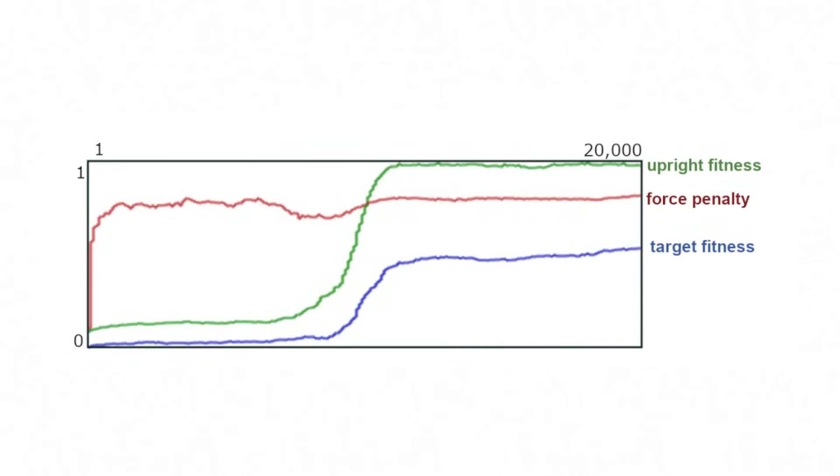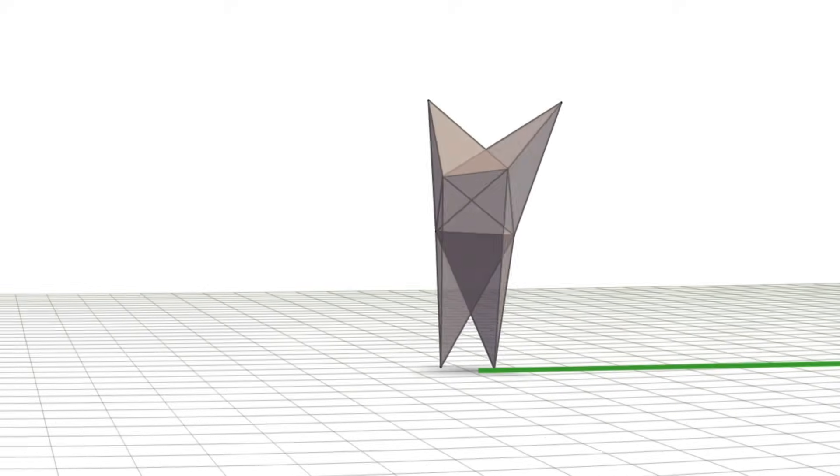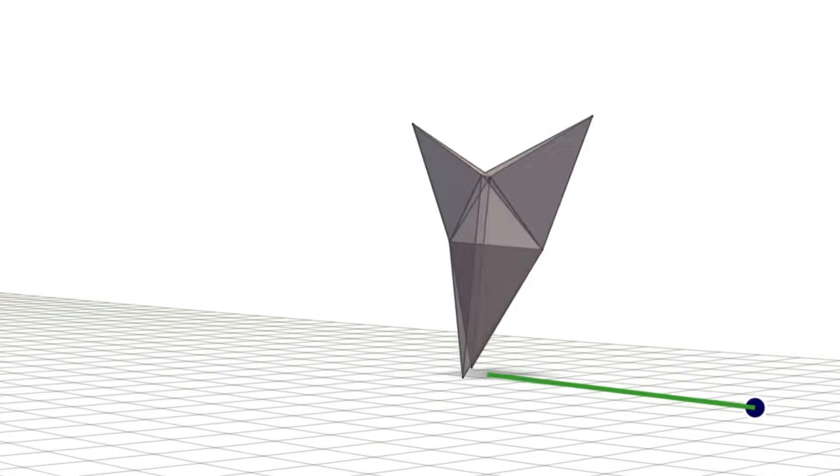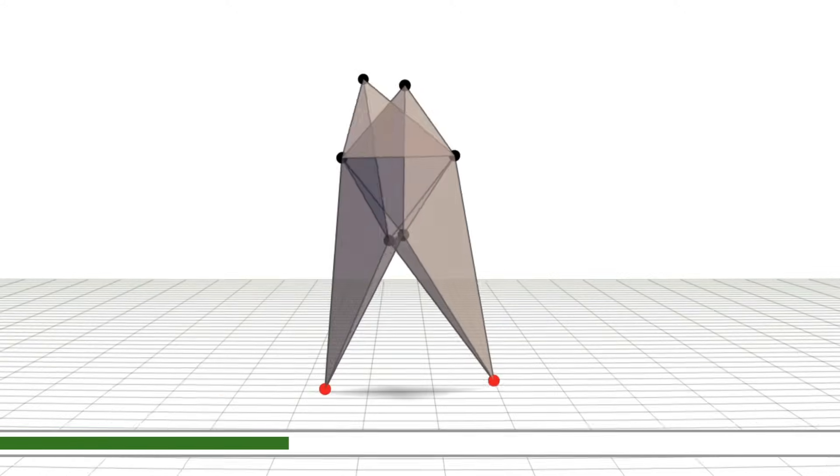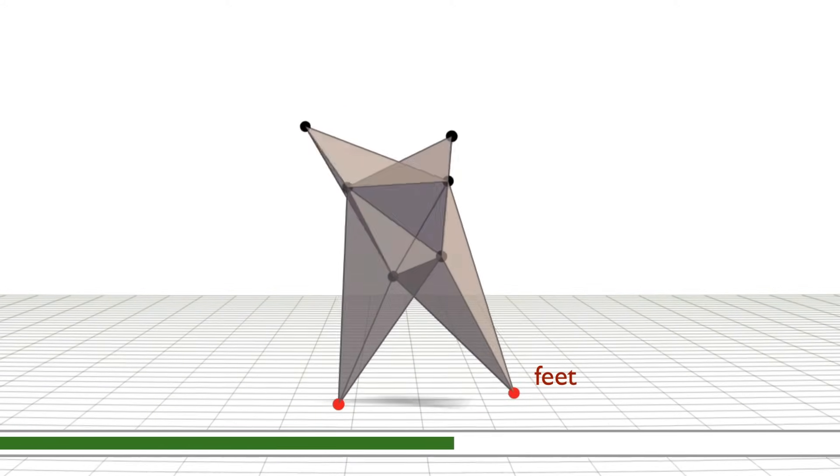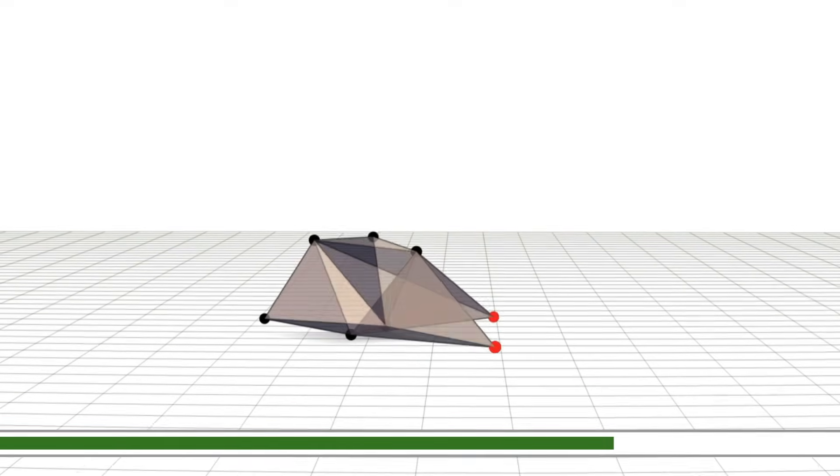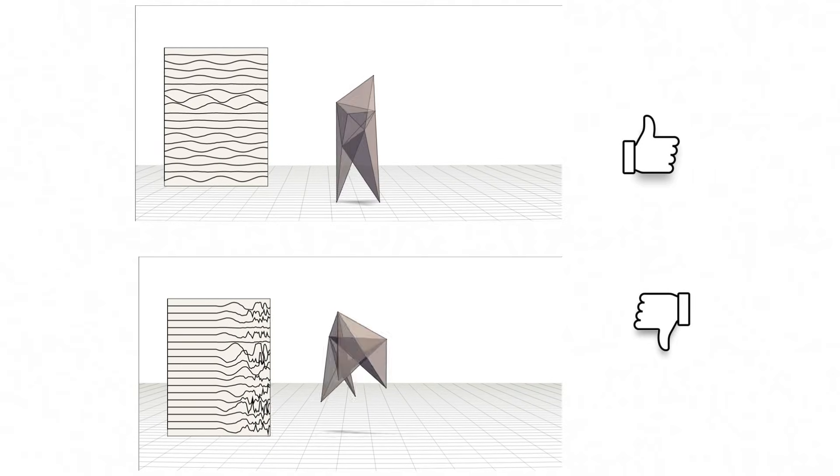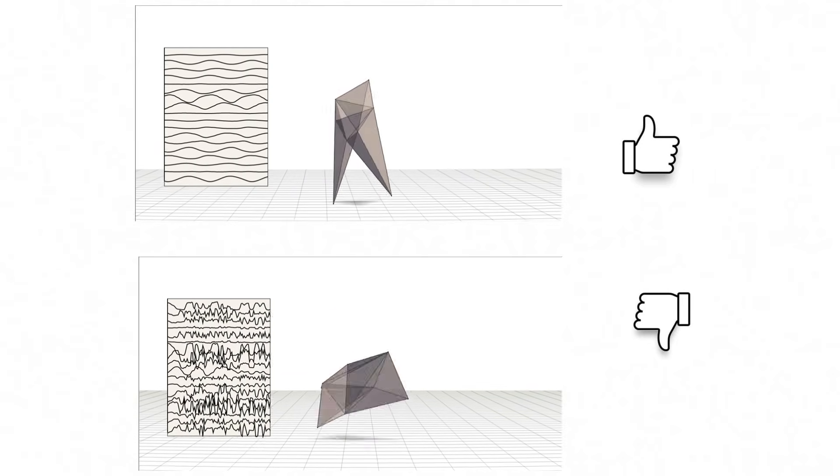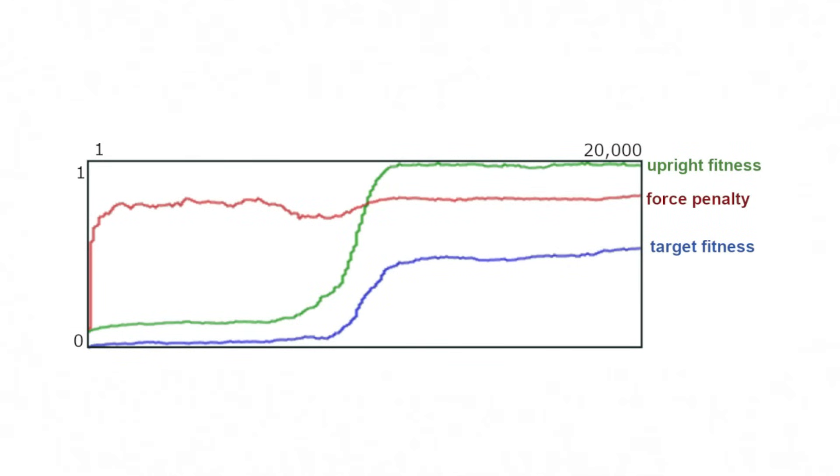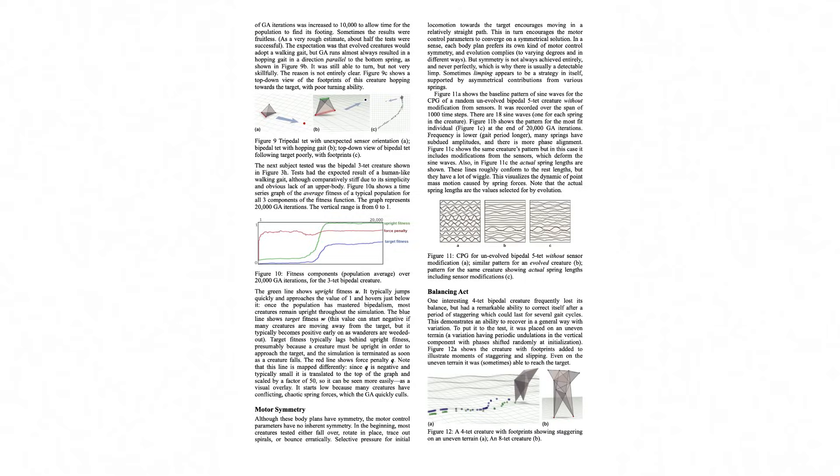There are three components to fitness. How close the creature is to the target on average over its lifespan. How long the creature remains upright before falling onto a non-foot point. And how energy efficient it is. Energy efficiency is measured as the inverse of average spring force. It's used as a fitness penalty. The details of all of this are explained in the paper.